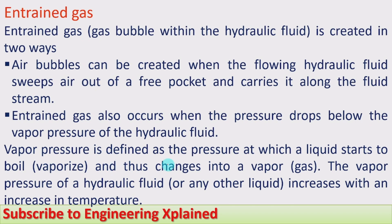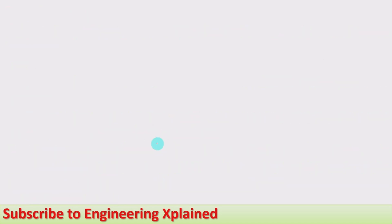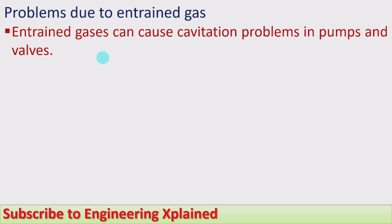Vapor pressure is defined as the pressure at which a liquid starts to boil, vaporize, and thus change into vapor or gas. The vapor pressure of hydraulic fluid or any other liquid increases with an increase in temperature. Whenever the fluid pressure reaches the vapor pressure, it gets vaporized, and that vaporized fluid enters the hydraulic fluid as entrained gas.